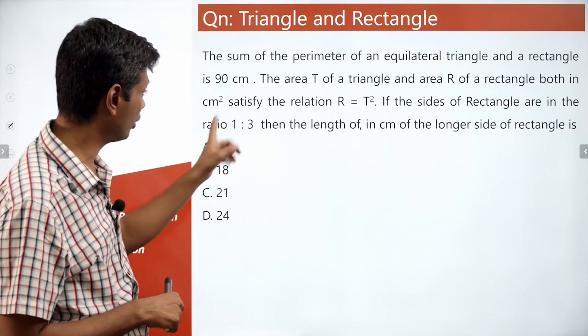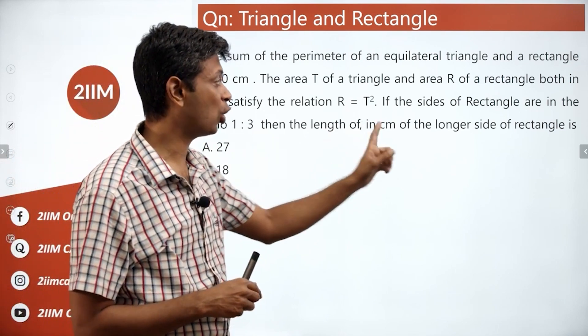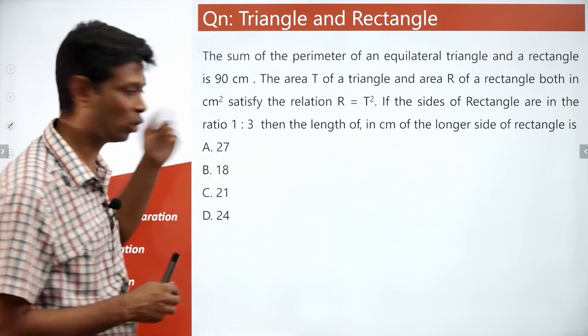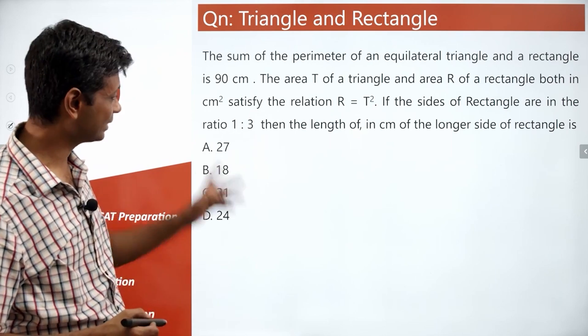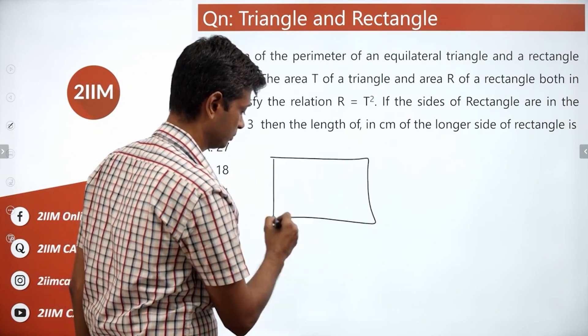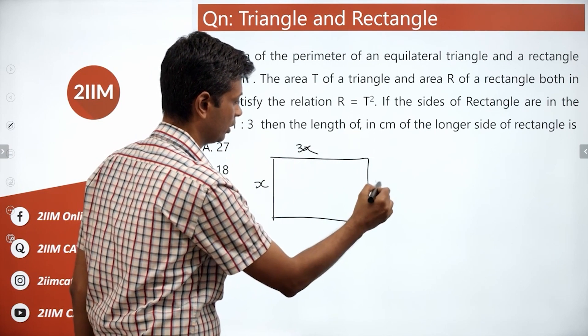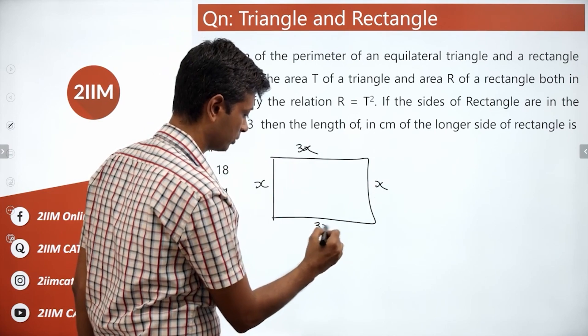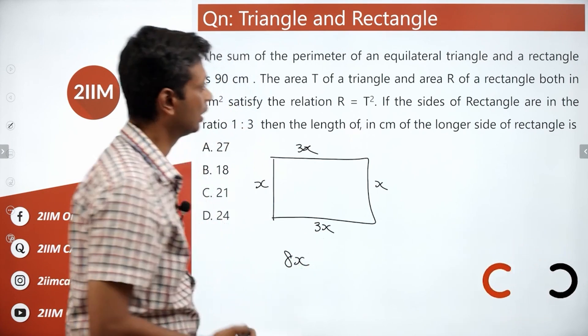The sides of the rectangle are in the ratio 1 is to 3. The length in centimeters of the longer side of the rectangle is whatever it is. The perimeter of equilateral triangle and a rectangle is 90 centimeters. I'm going to start with the rectangle. And so this is x, this is 3x, x, 3x and so perimeter is 8x. Lovely.